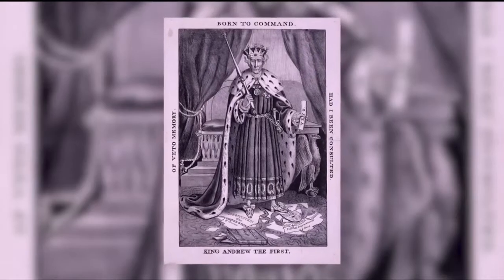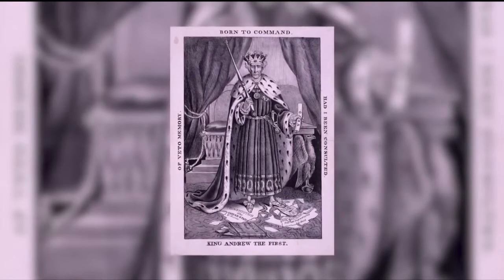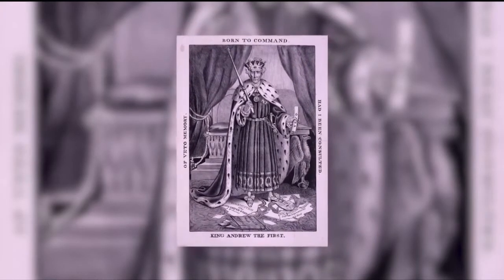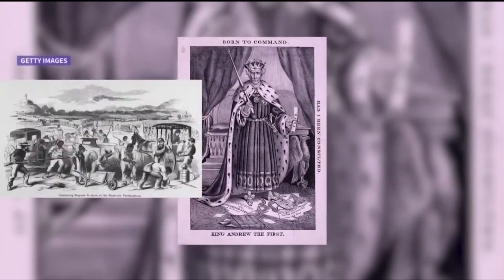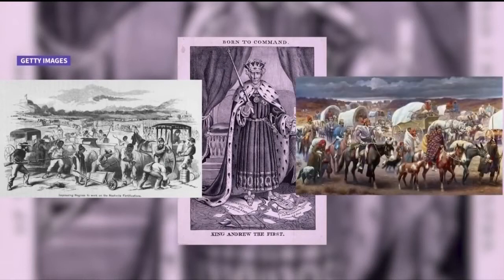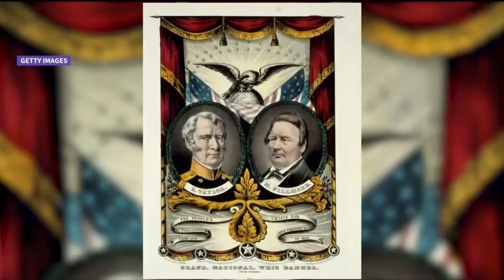But not everyone agreed with Jackson's visions, which included expanding slavery and resettling Native Americans. His opponents blasted Jackson as a tyrant and founded the Whig Party to oust so-called King Jackson.